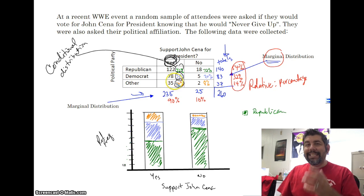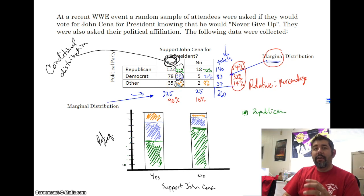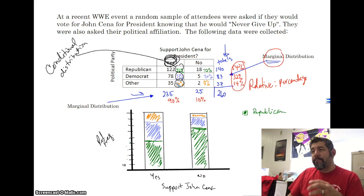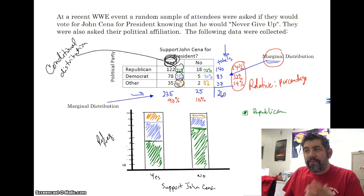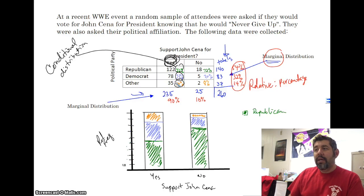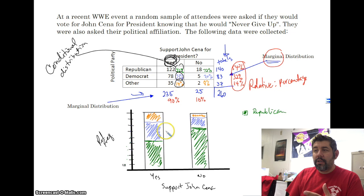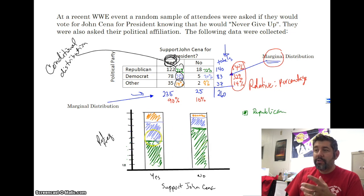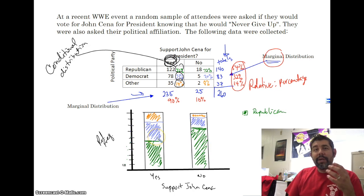So if asked for the conditional distribution of yes supporters for John Cena for president, you would say: 52% of the yes votes were Republican, 33% of the yes votes were Democrat, and 15% of the yes votes were Other.